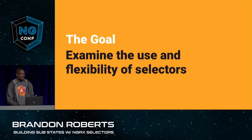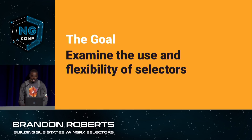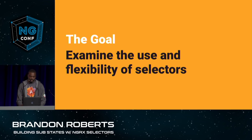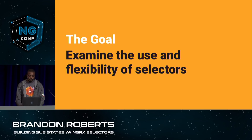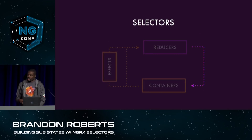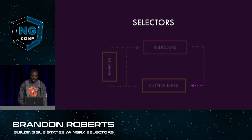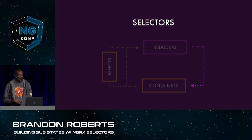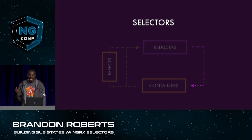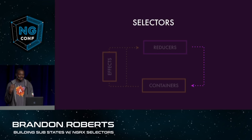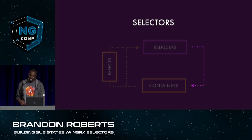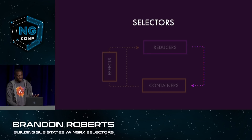Let's get into what we want to talk about today: the selectors. We want to examine the use and the flexibility that selectors provide for you in NGRX. You've probably seen this before, but I'm contractually obligated to show you this site, this reactive cycle every time we talk about NGRX, because it's a cycle of state changes, reducers, and selectors. Selectors represent the purple line on the right side of the screen, and they're what bind your global state to your components.